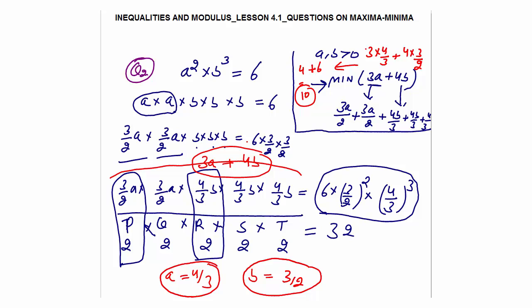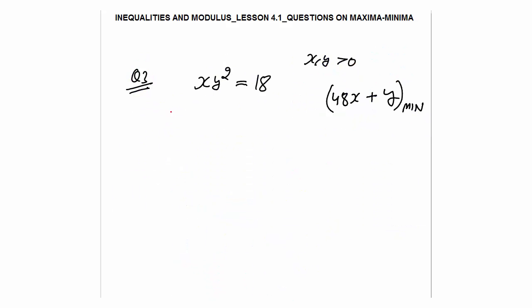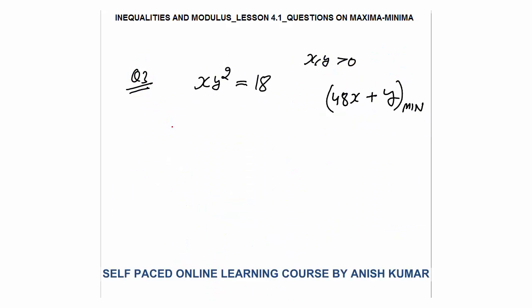It is a very simple question. First break the expression as a × a × b × b × b = 6, then convert the terms as required and you get your final answer. Question 3 is similar to question 2 — pause the video and try to solve yourself before looking at the solution. Given: x × y² = 18, x and y are positive, find the minimum value of 48x + y.